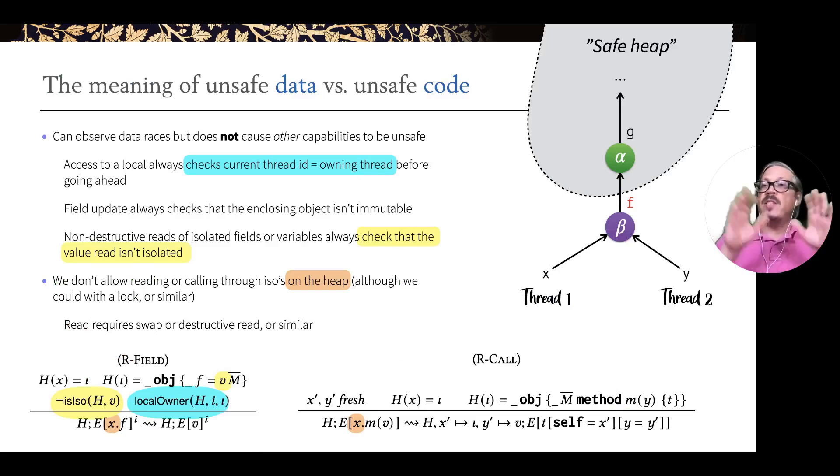We have the safe heap and we have the unsafe heap. We talk about safe data versus unsafe data. Unsafe data is quite different from unsafe code. Unsafe data is data that can witness a data race. But the data races of the unsafe data, they cannot propagate into the safe heap.